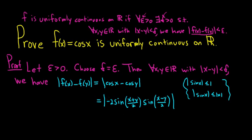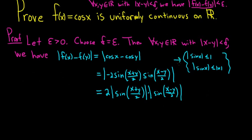So the negative 2 here doesn't matter, because when we take the absolute value of it, it's going to go away. In fact, let me just go ahead and show an extra step. So the absolute value of negative 2 is 2. And we have times the absolute value of the sine of x plus y over 2 times the absolute value of the sine of x minus y over 2. Okay, good stuff.